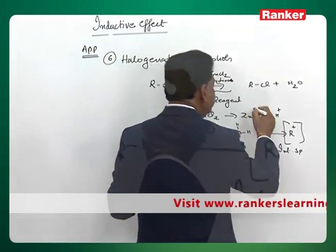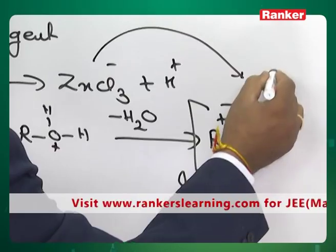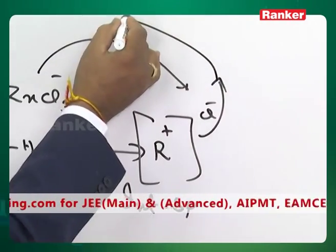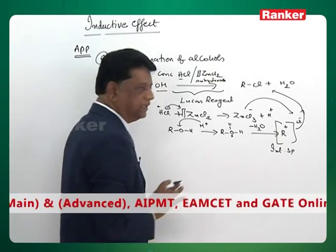On the R plus, ZnCl3 minus again donates Cl minus, that minus will attack and you are getting the alkyl chloride, that is the final reaction.